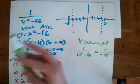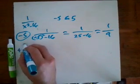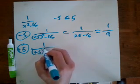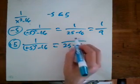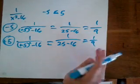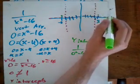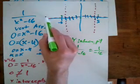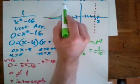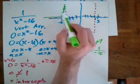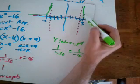Now let's do positive 5: 1 over positive 5 squared minus 16. Positive 5 squared is still 25, so that's still going to be positive 1/9. So we come up here and make our dot. Since the graph can't cross this vertical asymptote, we know it's going to come from the asymptote and gradually come down through that point. The same thing happens on the other side — it comes down and goes through that point as well.